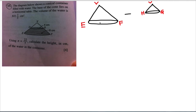Today I'm going to make a very short video about this question from my Facebook page. The diagram below shows a conical container filled with water. The base of the cone lies on the horizontal table. The volume of the water is 821 and 1/3 cm cubed, and you are asked to use pi = 22/7. Calculate the height of the water in the container.